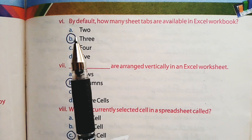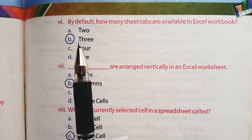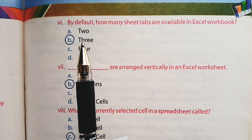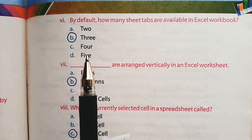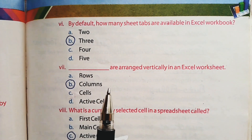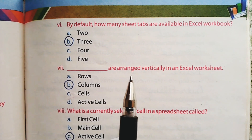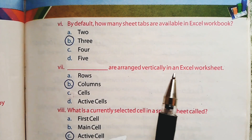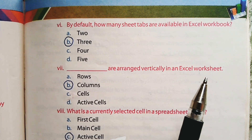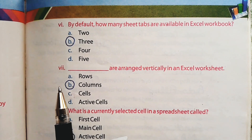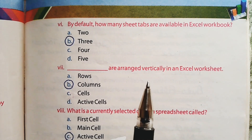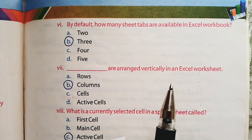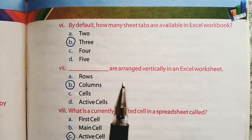Part number 6: By default, how many sheet tabs are available in an Excel workbook? Option B is the right option — by default there are three sheet tabs in an Excel workbook. Part number 7: Dash are arranged vertically in an Excel worksheet. Option B is the right option — columns are arranged vertically, and columns are represented by alphabets.